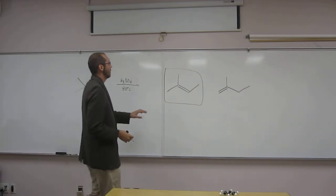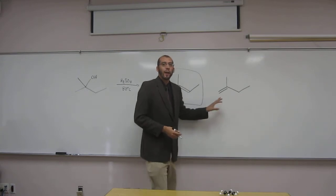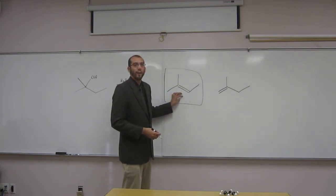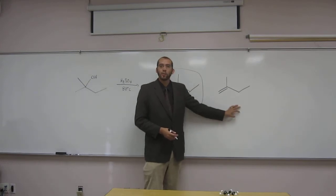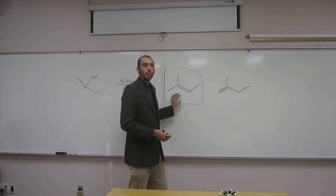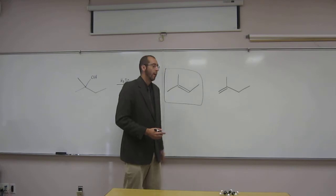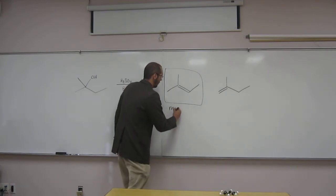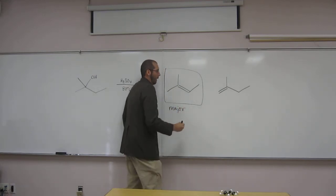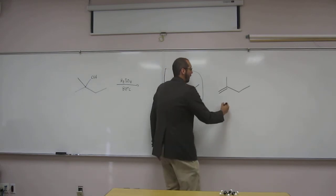So, why is this one more substituted than this one? How about, we'll ask, how many substituents do we have around the alkene here? Three. And here? Two. So, this one's more stable than this one. We would say this is the major product. And we would say this is the minor product.